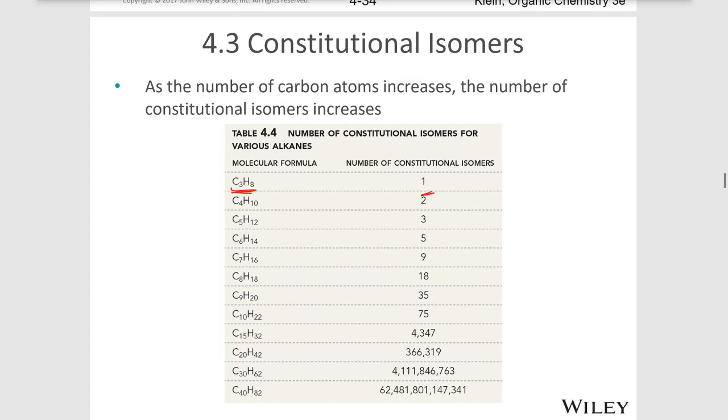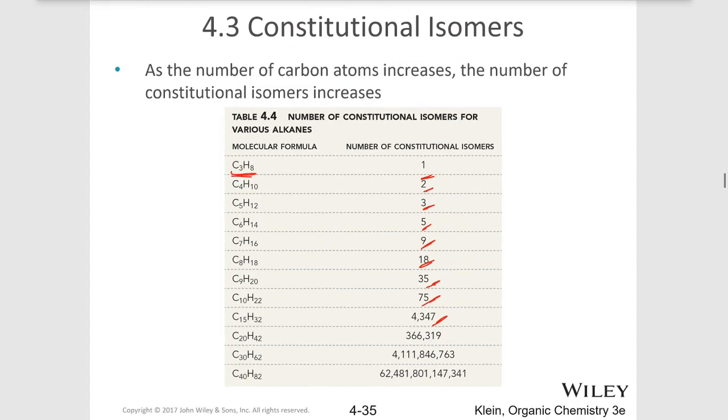If you have four carbons, there are two. Five carbons are three, six is five, seven is nine possibilities. So nine different ways those can be connected. Eight carbons has eighteen, and then it just increases exponentially from there. Nine carbons is thirty-five, ten carbons is seventy-five, fifteen is four thousand three hundred forty-seven, and so on. So the more carbons you have, the more ways you can arrange those carbons as isomers.